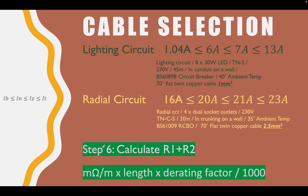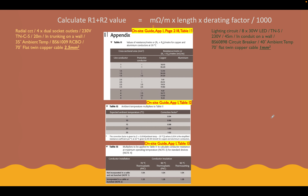We're on to step six now of the cable selection, and we're going to calculate our R1+R2 value using this formula we see below here. Take a note of that formula — definitely need that one. Here are our two circuits we're working on, with all our values inputted in the equation, which we've satisfied so far, and we've got our cable sizes.